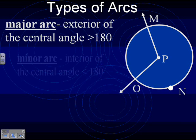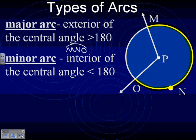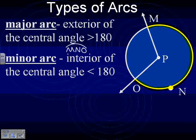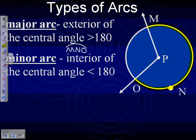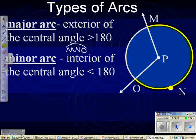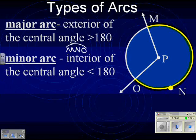And it's just the opposite of the major. It's interior of the central angle, and it's less than 180. So what might be an example of a minor arc here? MO. Yep. So if I go from M to O, that would be an example of a minor arc. So I just call that MO.